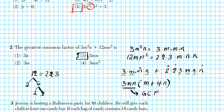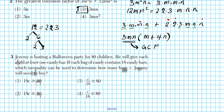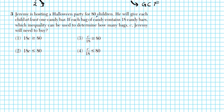Let's shift our attention to problem number 3. Jeremy is hosting a Halloween party for 80 children. He will give each child at least one candy bar. If each bag of candy contains 18 candy bars, which inequality can be used to determine how many bags, C, Jeremy will need to buy? We're going to write down an equation that guarantees that every child gets at least one bag.